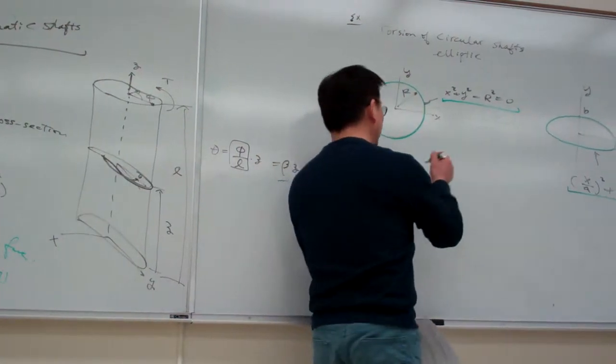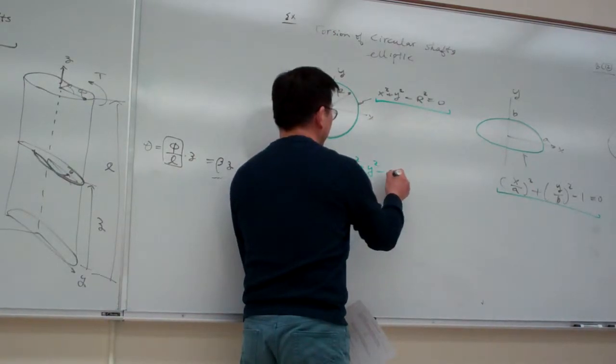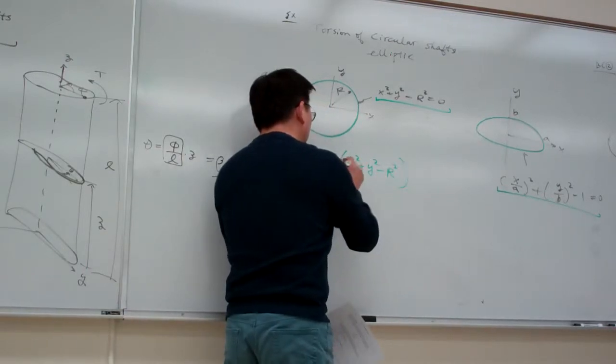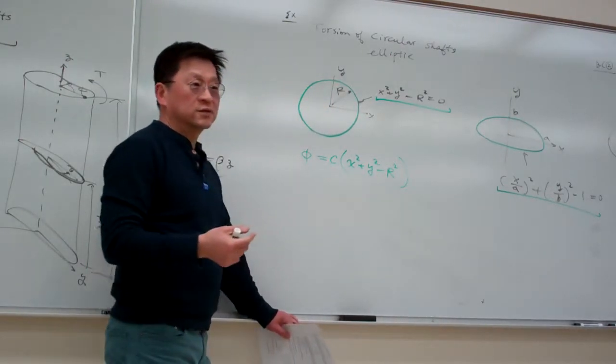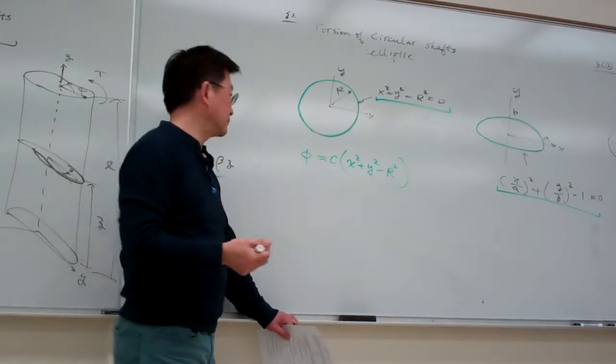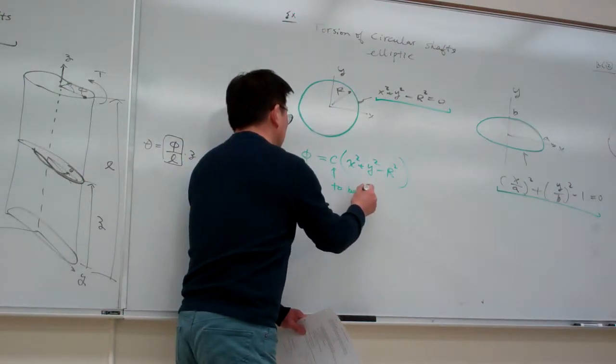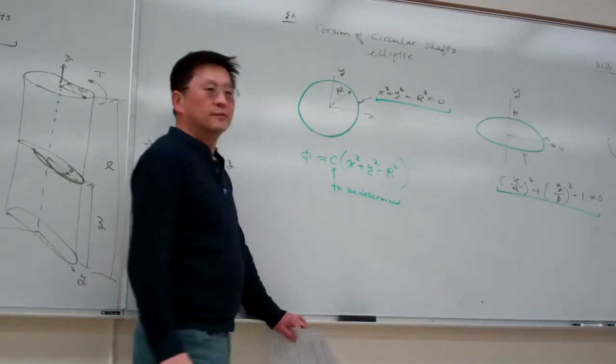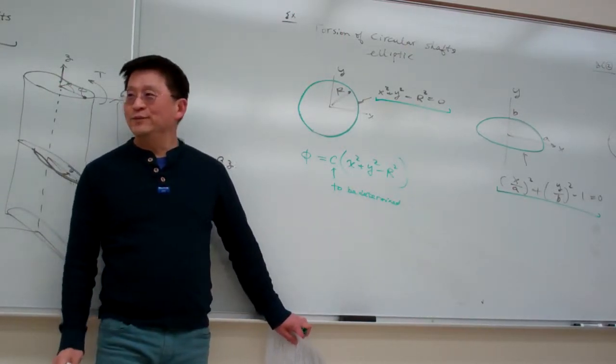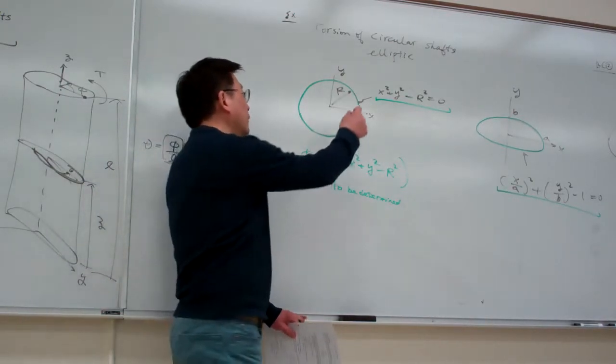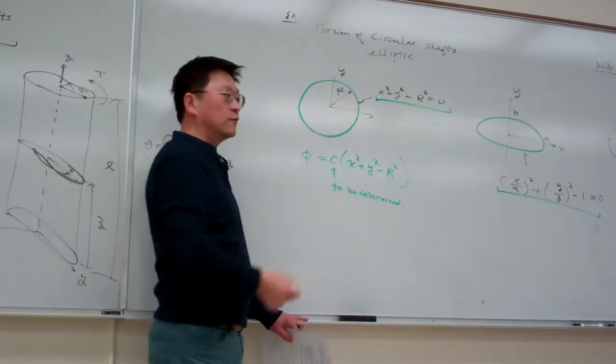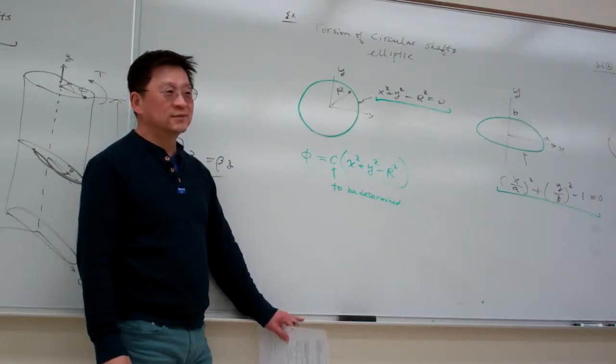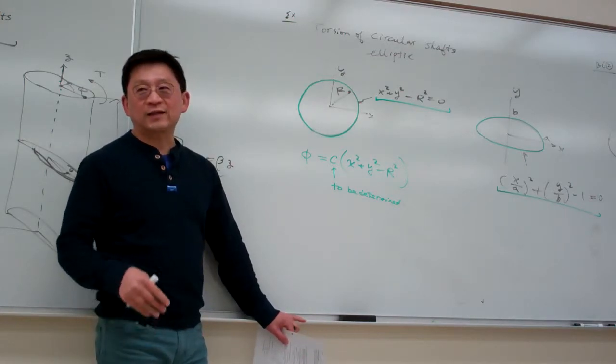So you simply pick this one. And to be general, you say, let me see, c is a constant to be determined. That is simple. So, as long as you can come up with the equation describing the profile, the boundaries of the cross-section, that is a candidate. I wouldn't say that it is, but that is the candidate.